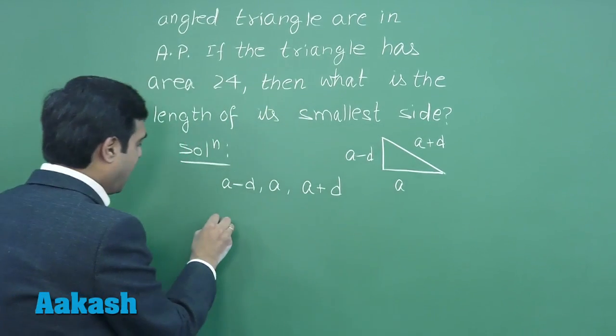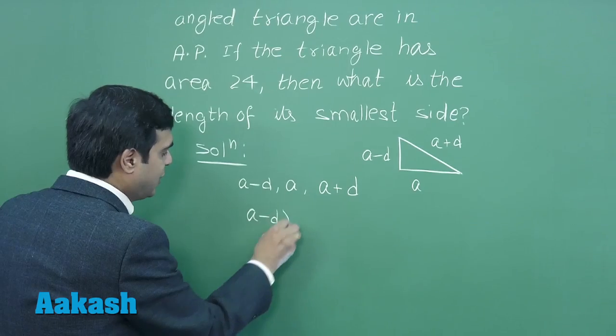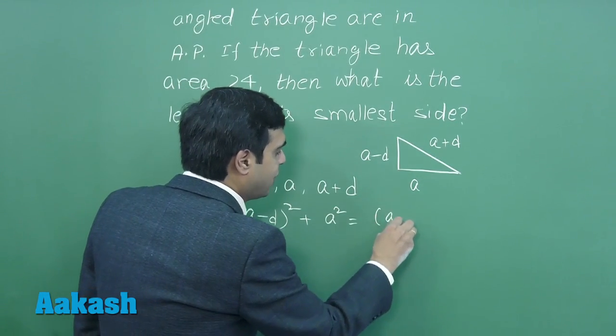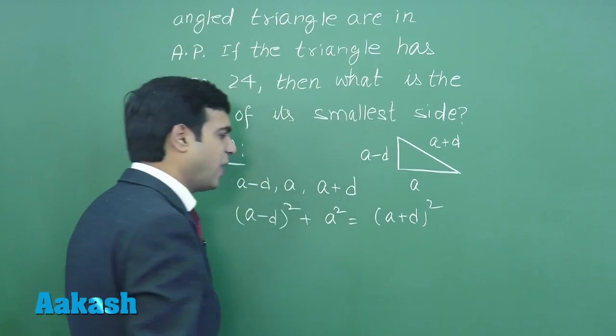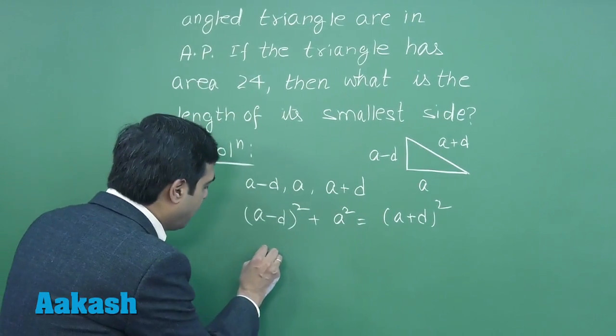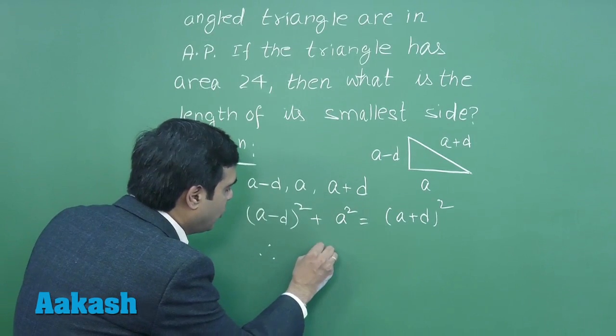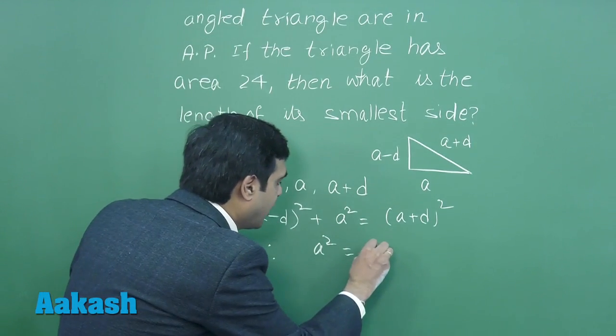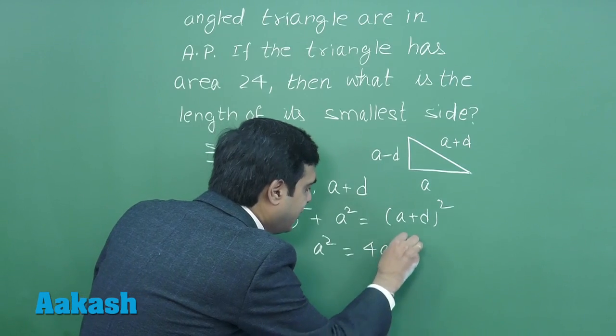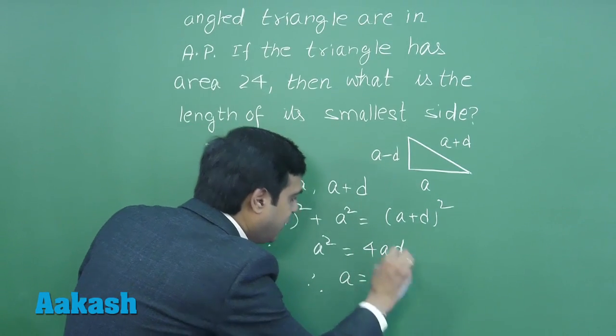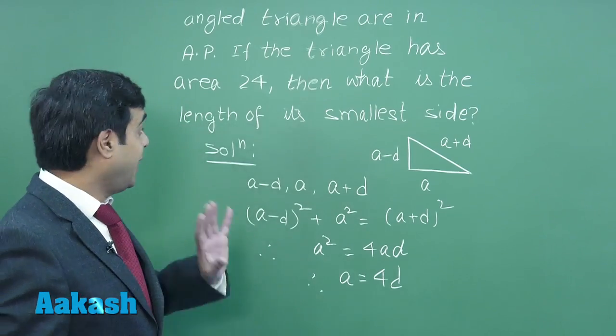So we have (a - d)² + a² = (a + d)². Just simplify to get the relation between a and d. What we obtain: a² cancels, d² cancels, leaving 4ad. So we have a = 4d. This point is clear.